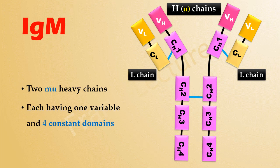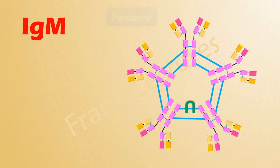IgM as a monomer consists of two mu heavy chains and two light chains. Each heavy chain contains one variable domain and four constant domains. Now let's look at IgM as a pentamer.